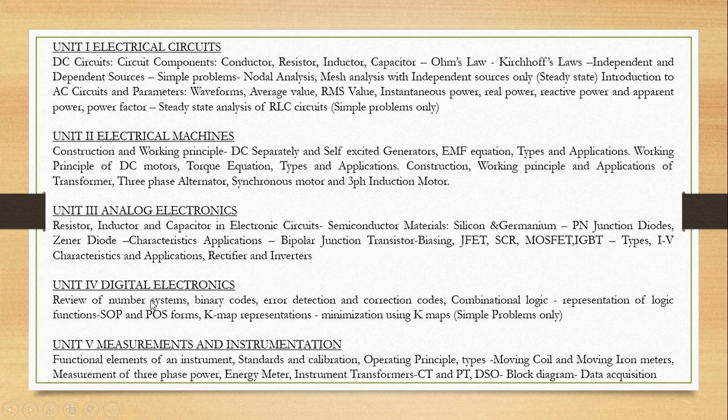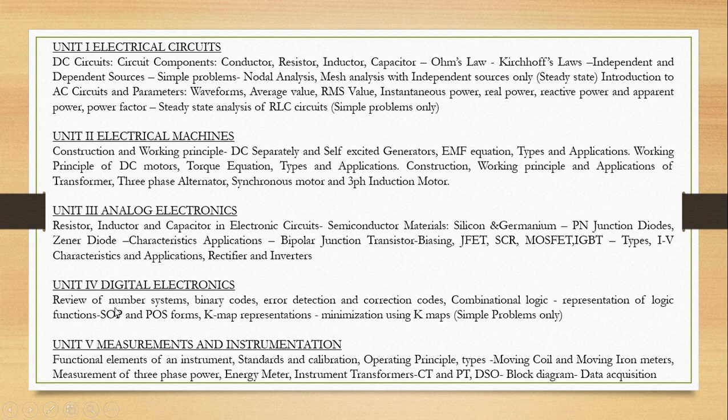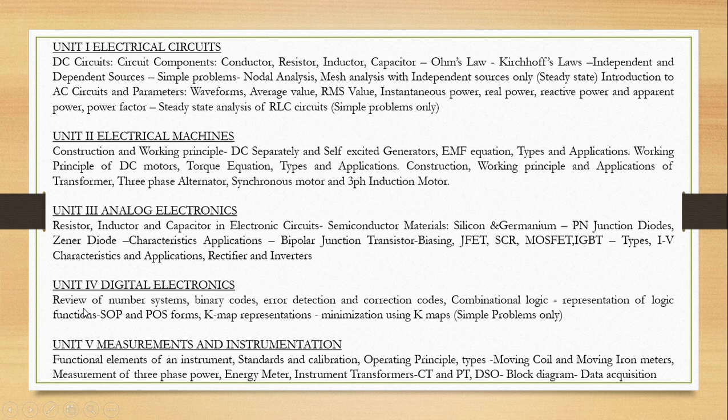And the fourth one is digital electronics. In this unit, digital systems are explained. For that, first year students should know about review of number system, binary codes, error detection and correction codes are given. For that one, combinational logic circuits also involved in this unit that is digital electronics. Finally, KMAP representation minimization using KMAPs for that simple problems are solved.